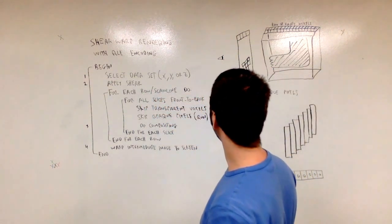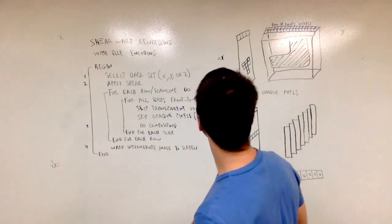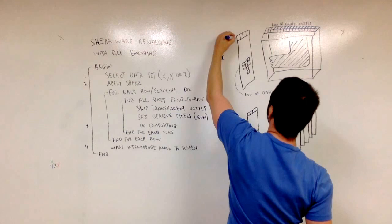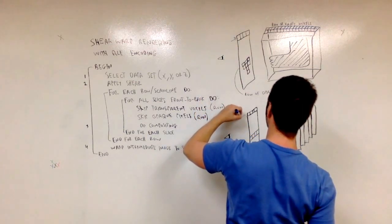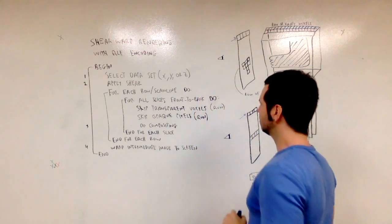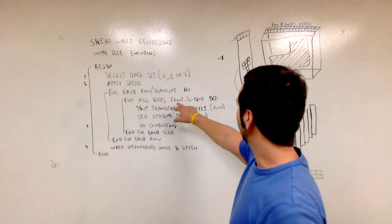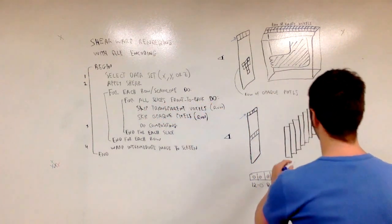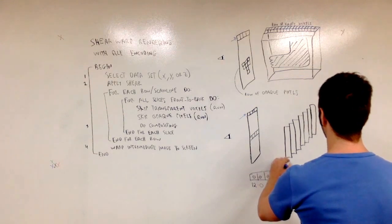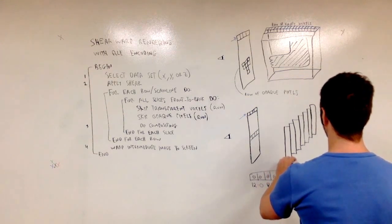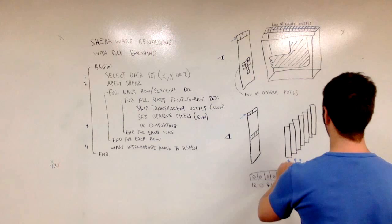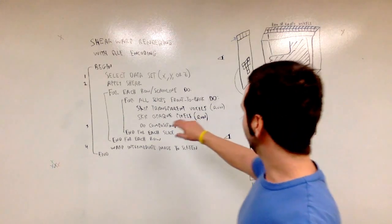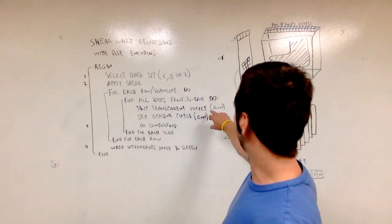For each row or scan line do something. So this is a row or a scan line. For each slice from front to back do something. So this is a slice from the front to back, and then to the back in this direction. Then we skip transparent voxels. That's a run.